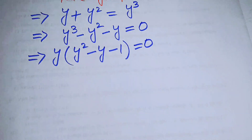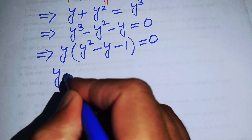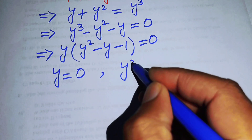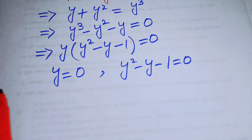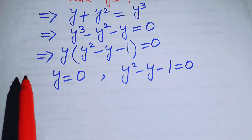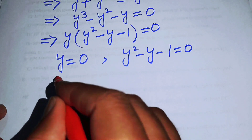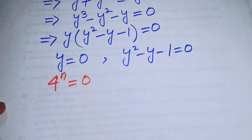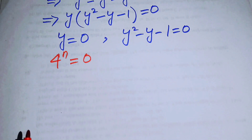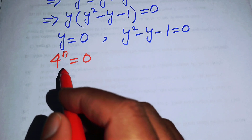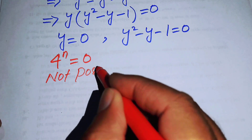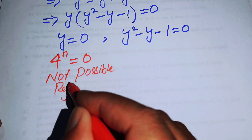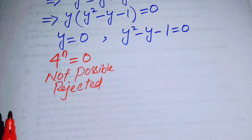This gives two cases. The first case is y equals 0, and the other is y squared minus y minus 1 equals 0. For the first case, back-substituting y equals 4 to the power of n gives 4 to the power of n equals 0. Since an exponential function cannot equal 0 or a negative value, this case is not possible and we reject it.